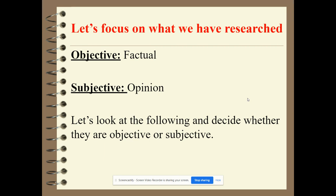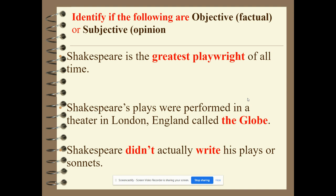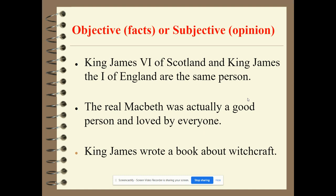We've looked at facts versus opinions — factual is objective, opinion is subjective. 'Shakespeare is the greatest playwright of all time' is an opinion — subjective. 'Shakespeare's plays were performed at the Globe Theatre in London, England' — that is factual, objective. 'Shakespeare didn't actually write his plays or sonnets' — that's an opinion, subjective. 'King James the Sixth of Scotland and King James the First of England are the same person' — true, objective. 'The real Macbeth was a good person loved by everyone' — that's an opinion; the real Macbeth also had to murder his way to the throne.